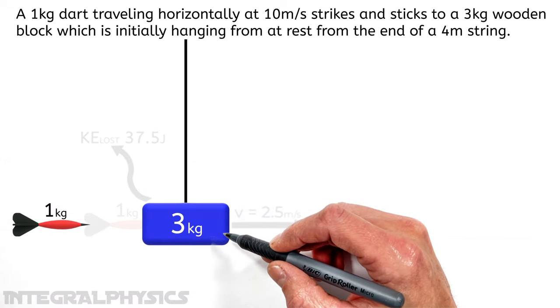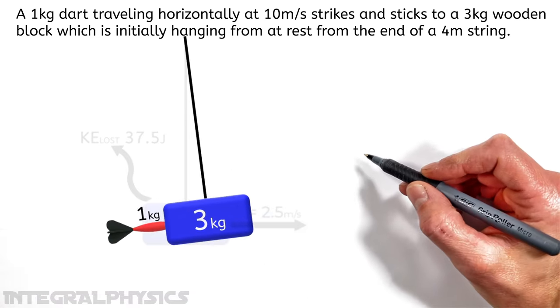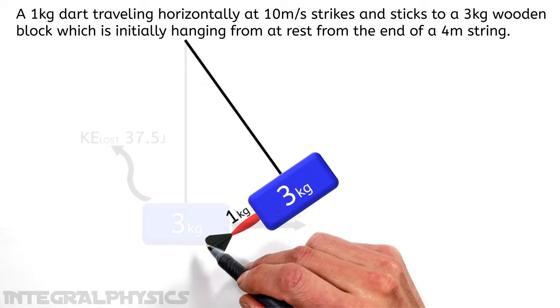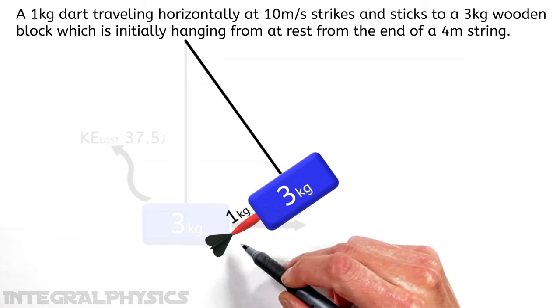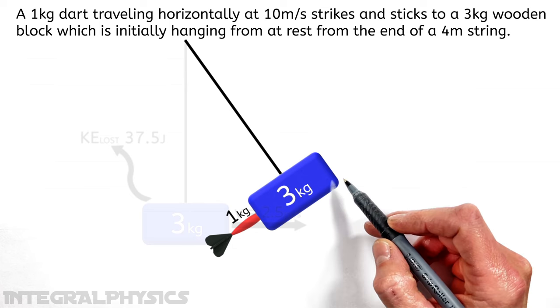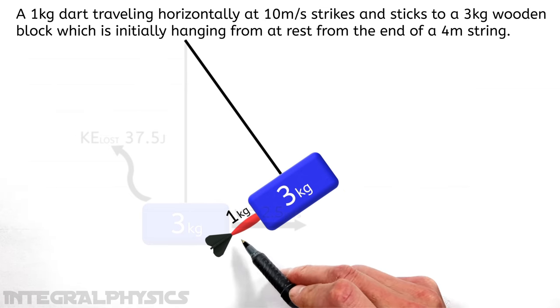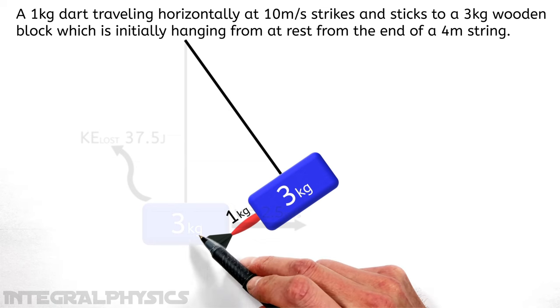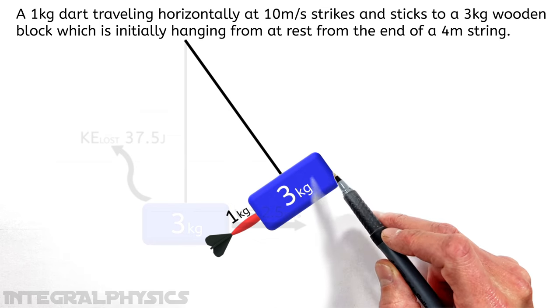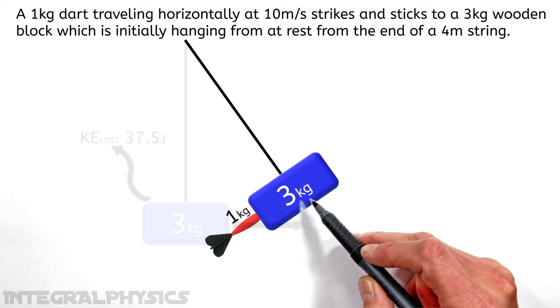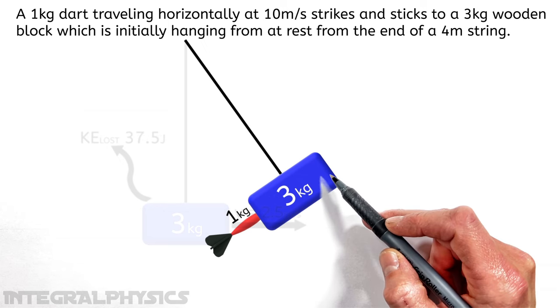So after this dart strikes the block, the two objects are going to swing backwards. And as they swing backwards, we don't have a collision occurring. But what we have really is the conservation of mechanical energy. Ultimately, what's going to happen is the kinetic energy, which this system or dart and block possesses here, is going to turn into gravitational potential energy as the dart and block swing upward and gain height.